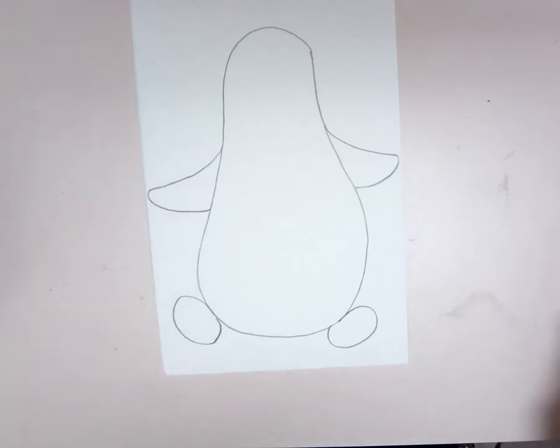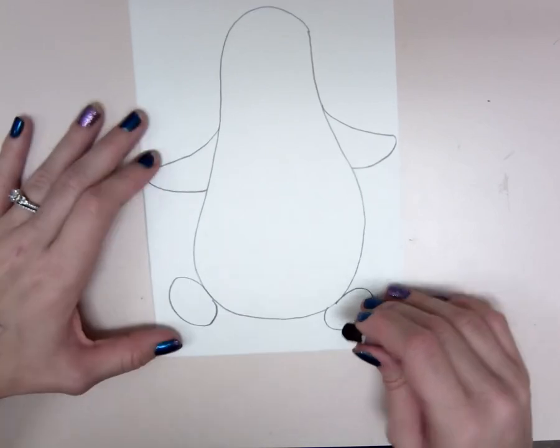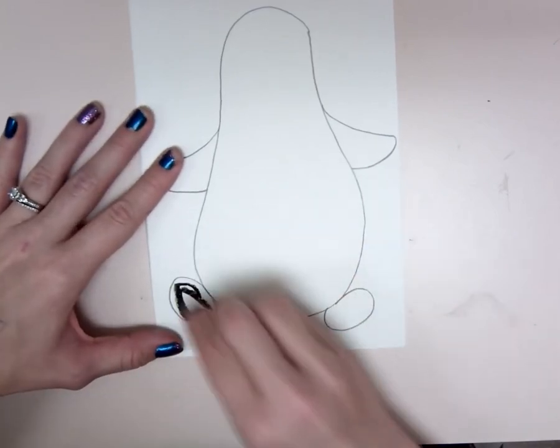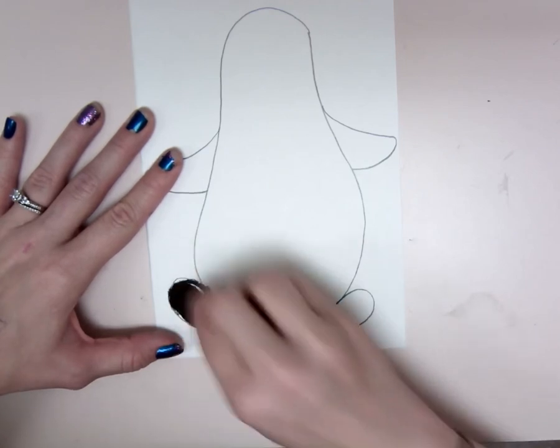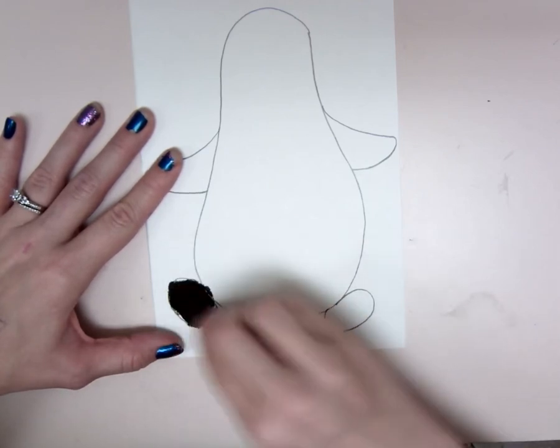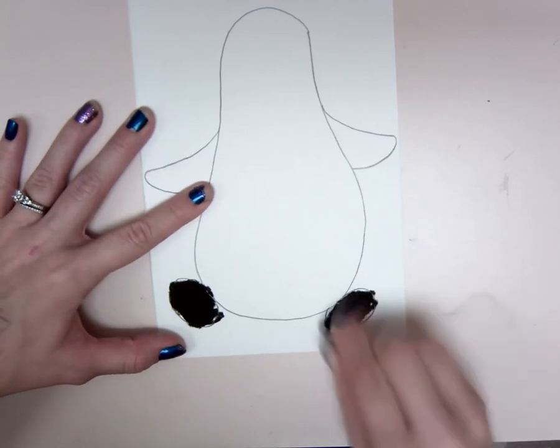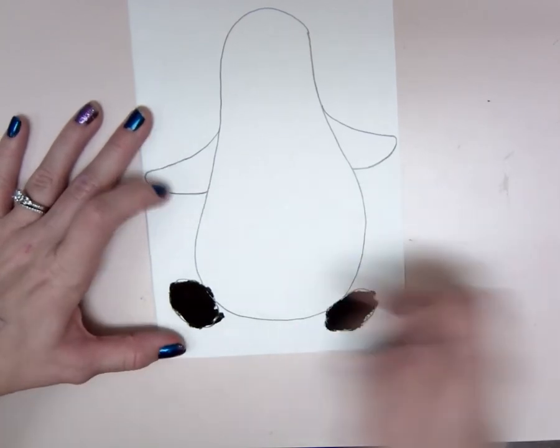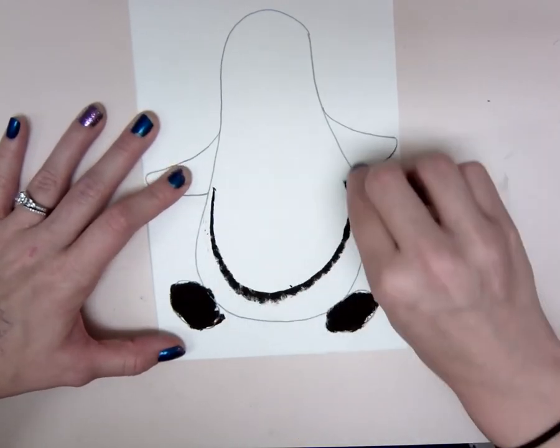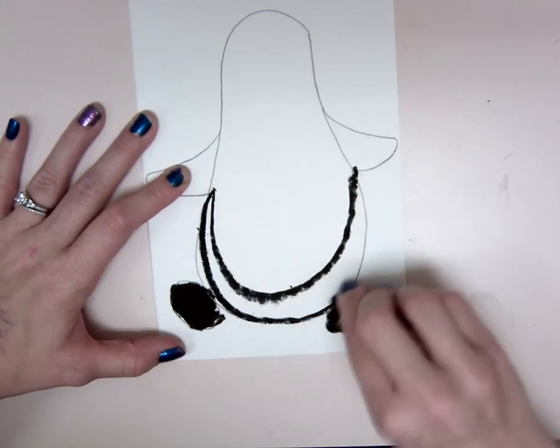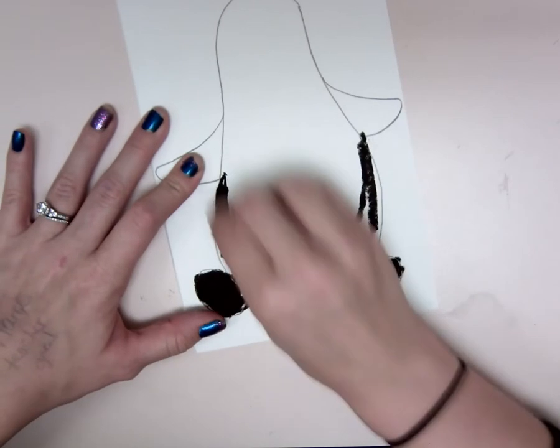Then once you're done with that you're going to switch to oil pastels and you're going to color the bottom of your penguin, you're going to color the feet and try to get all the white spots. And then you're going to color from the bottom of the wings all the way down, you're going to make a nice U, like that, where it kind of looks like a sideways C. And then you're going to color that in.